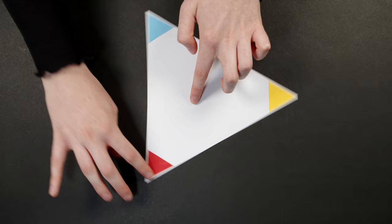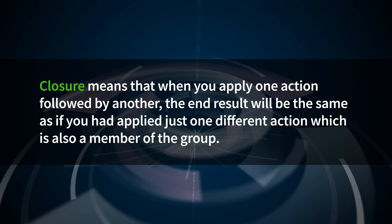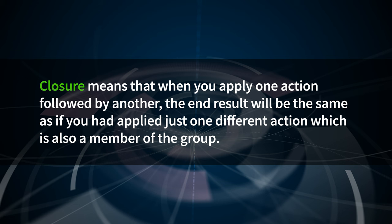Now, let's tackle the checklist of properties the group has to satisfy. First, the group must satisfy closure. This means that when you apply one action followed by another, the end result will be the same as if you had applied just one different action, which is also a member of the group. We say that we have closure, since no matter how many actions we apply, we still end up with another action in the group. It's like once you obey the rules of the group, you cannot escape. Imagine a chicken trapped in an egg — it's trapped inside unless it does something to break the structure of the egg. The same can be said for a group: if you want to obtain an element that is outside of the group, you must break the rules of the group.